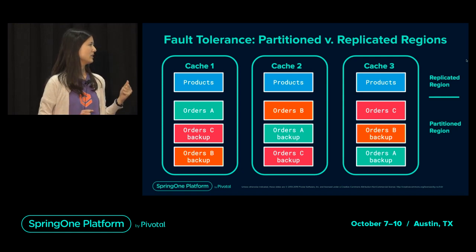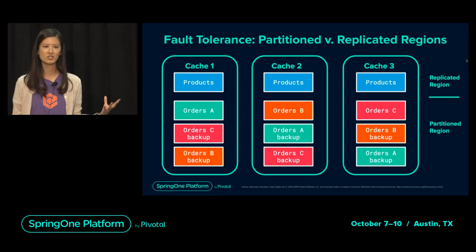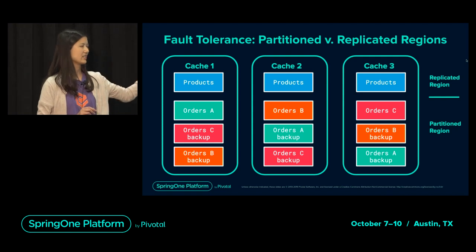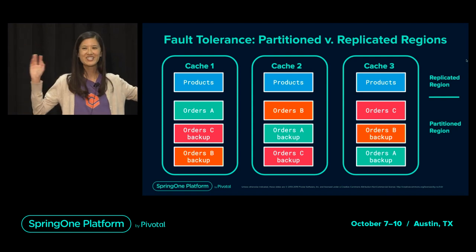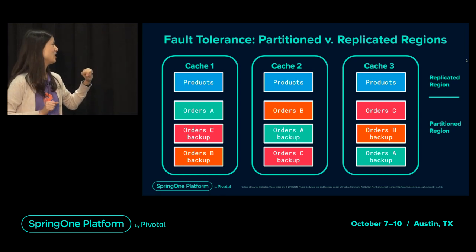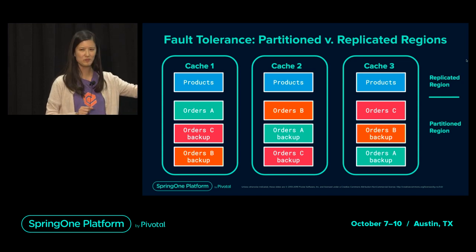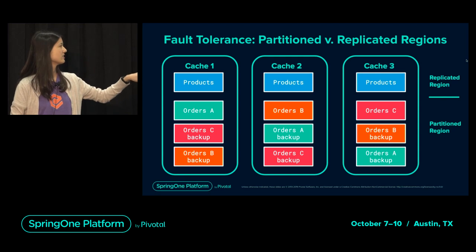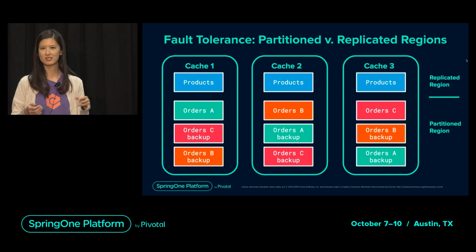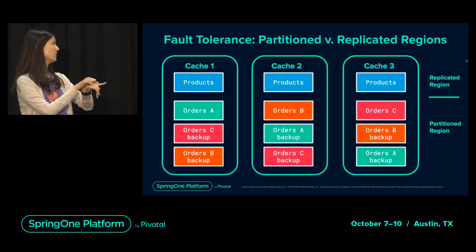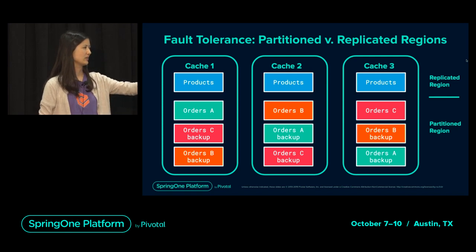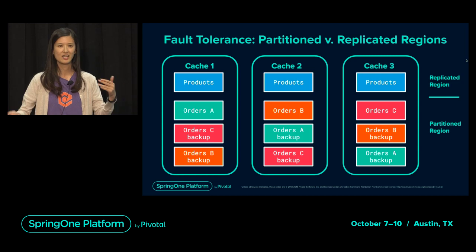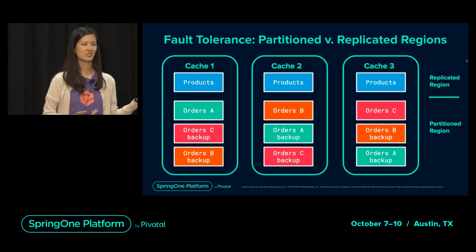With partitioned regions, you split up your data — use a partitioned region if you've got a really large data set, whereas for a relatively small data set like products for an e-commerce store, go ahead and replicate. Here you can see we have Orders A, B, and C representing splitting your data set into three partitions. Geode creates backup copies of your primary partition region — for Orders A in cache one, you have backups in cache two and cache three. If orders have sequential IDs, that's a natural fit for making Orders a partitioned region.